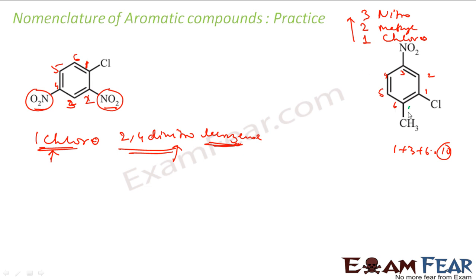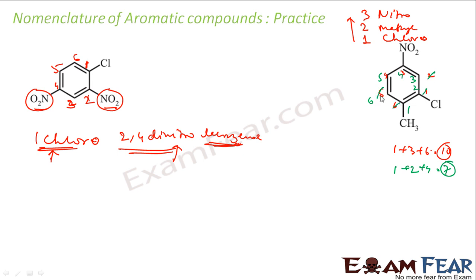Let's try another numbering to see if we get a lower sum. Giving position 1 to methyl, position 2 to chlorine, position 4 to nitro, the total sum is 1 plus 2 plus 4 equals 7. Since 7 is less than 10, we take the green numbering and ignore the red one. The green numbering is my final numbering.